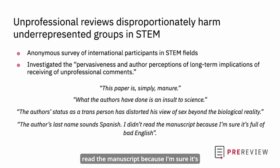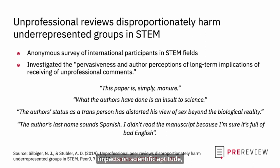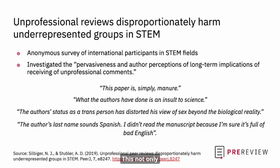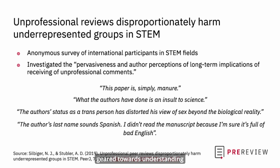The authors of this study found that traditionally underrepresented groups in STEM fields were most likely to perceive negative impacts on scientific aptitude, productivity, and career advancement after receiving an unprofessional review. This not only shows that unconstructive feedback is a reality in the space of scholarly evaluation, but also underscores the importance of training geared towards understanding the impact of bias and scientific oppression in this context.